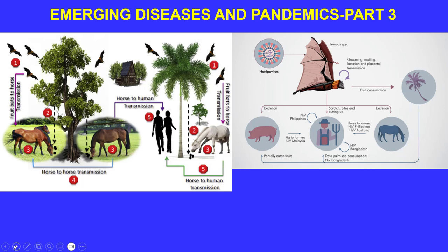You do have horse-to-human transmission. Looking at this diagram, the Henipavirus is maintained in flying foxes through grooming, mating, lactation, and placental transmission. The bats consume fruit, and they also consume the sap of date palms. Animals such as pigs can also consume fruit partly eaten by the bats, leading to infected material passing up to higher species.